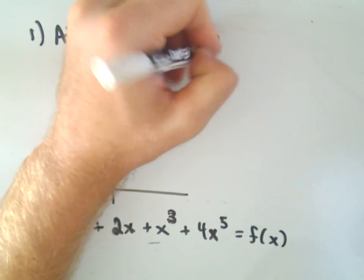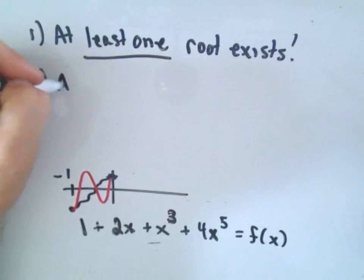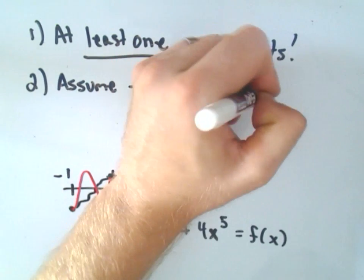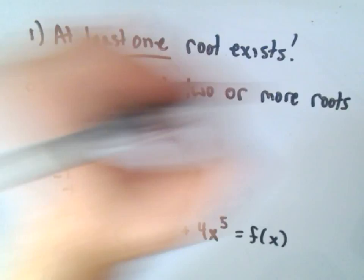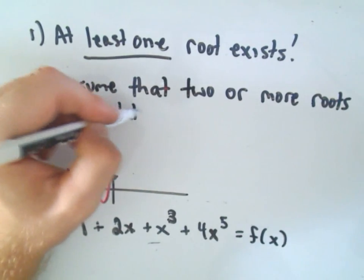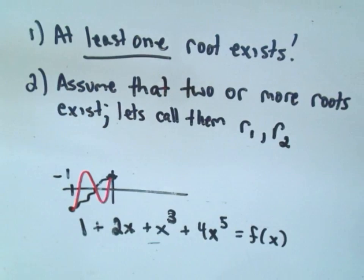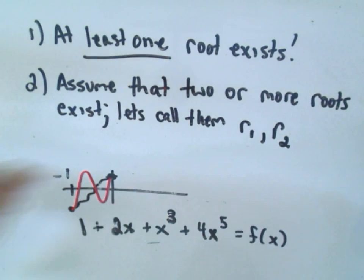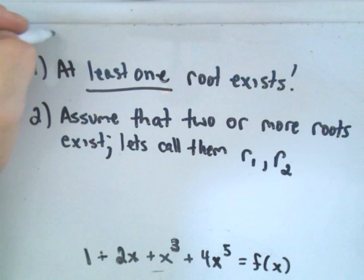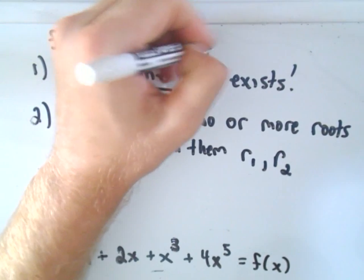So at least one root exists, and we're trying to show exactly one exists. Now let's make the assumption: let's assume that two or more roots exist. If two or more roots exist, we can give them names. Let's call them r₁ and r₂. So f(x) = 1 + 2x + x³ + 4x⁵, and we're going to assume two or more roots exist but show that leads to something that can't happen.